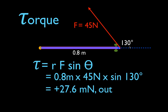This angle is theta. I want to point out that you will see people use the supplementary angle. If you know a little bit about trig, the sine of 130 and the sine of 50 are the same. So if you use the sine of 50, you will get the right answer. But technically speaking, theta is this angle — the one between the radial vector and force vector. You can actually use either angle.